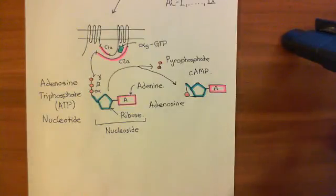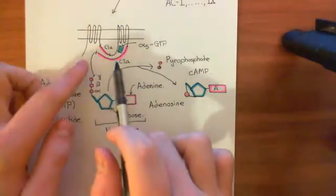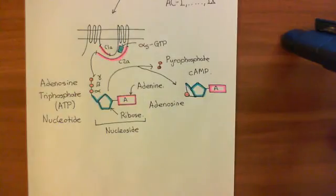So far, when we add adrenaline onto the beta-2 adrenergic receptor, it's going to interact with its GS heterotrimeric G protein to produce the alpha-S GTP subunit. That's going to then activate the adenylyl cyclase enzyme — whichever isoform of adenylyl cyclase it is — which will then create cyclic AMP from ATP.